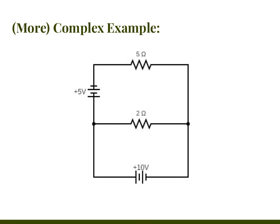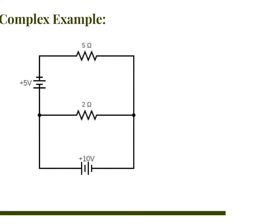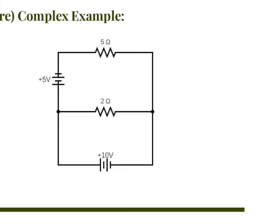Now let's evaluate this more complex circuit. When evaluating a circuit using Kirchhoff's laws, it's usually because you can't simplify it with just series and parallel. Here, the reason is two batteries — dealing with two batteries causes all sorts of complications. So instead of series and parallel, we have to use Kirchhoff's laws.